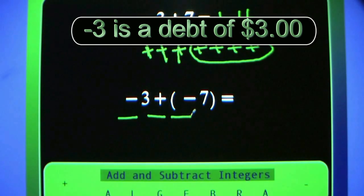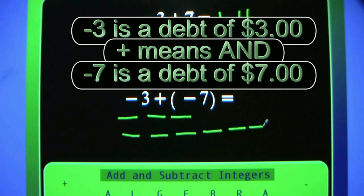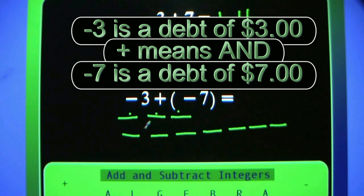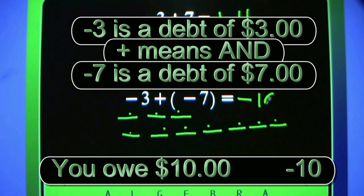Negative 3 plus negative 7. Subtraction signs — count them: 1, 2, 3, 4, 5, 6, 7, 8, 9, 10. Negative 10. Negative 3 plus negative 7 equals negative 10.